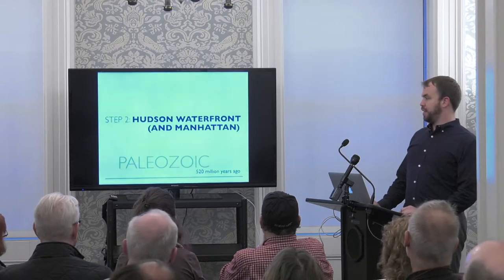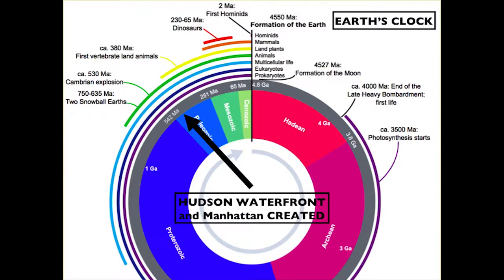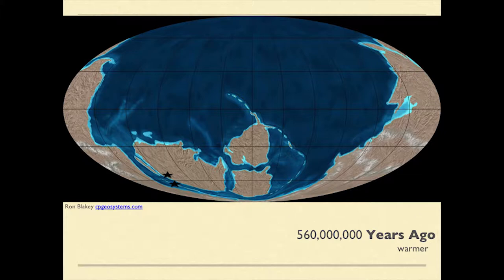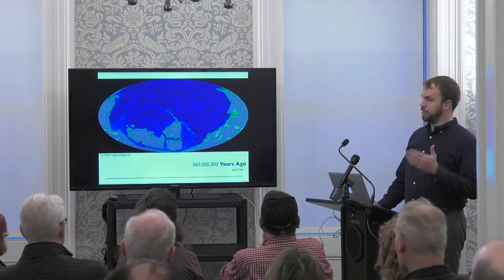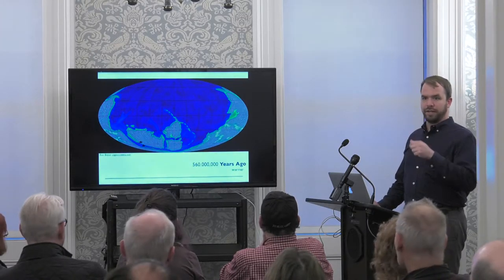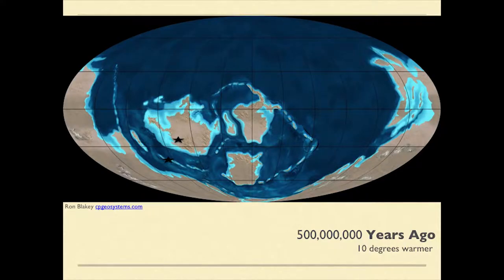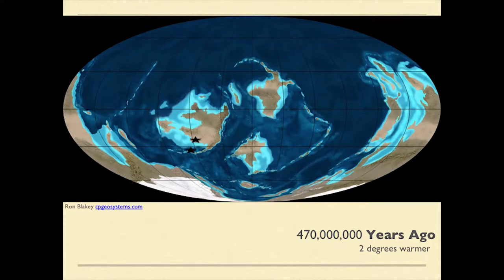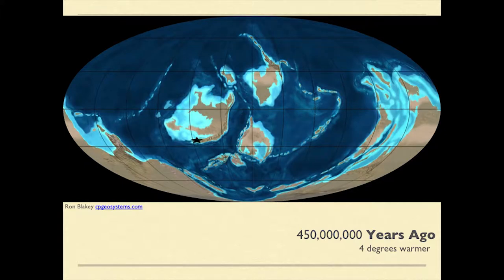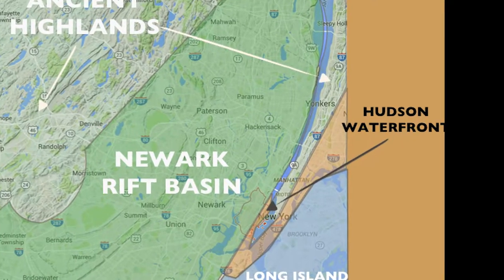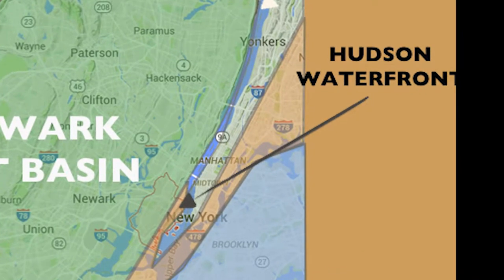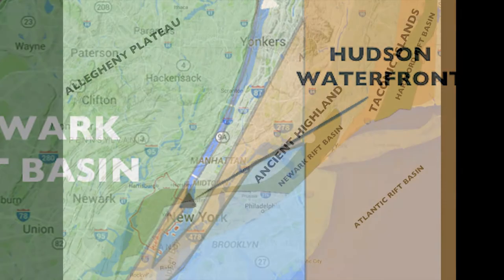The next step is the Hudson waterfront — including parts of Manhattan and Connecticut — which happened about 520 million years ago. 560 million years ago, part of Jersey City was on North America and part was in what we now call the Taconic mountain range. North America was drifting, and the chain of islands called the Taconics was chasing it, beginning to collide around 470 million years ago and ultimately merging around 450 million years ago. This is what creates the Hudson waterfront rock — the furthest south exposed rock from that collision.